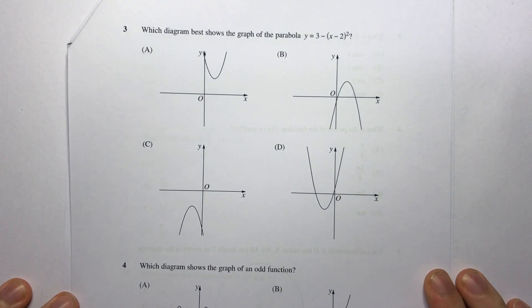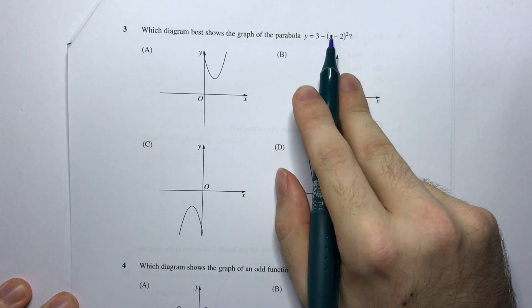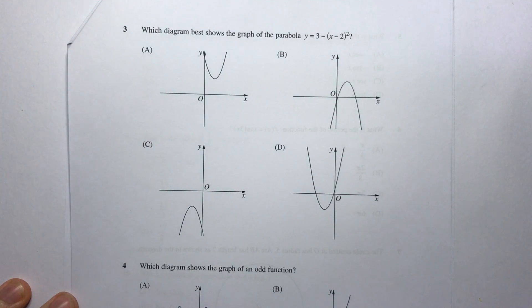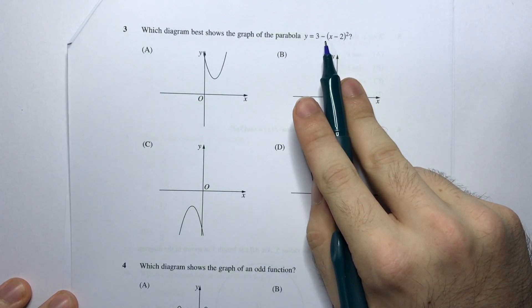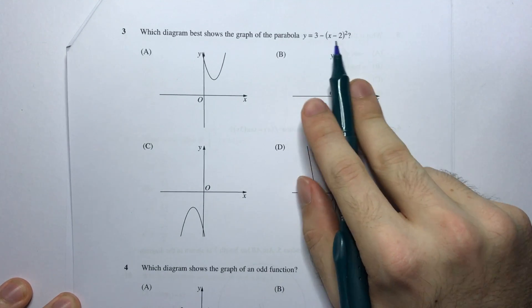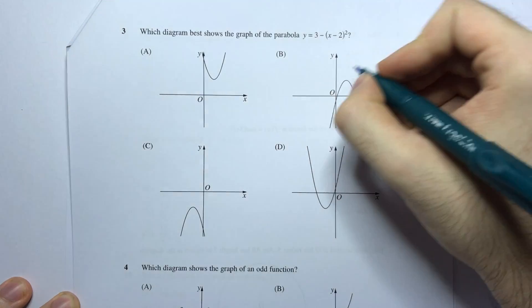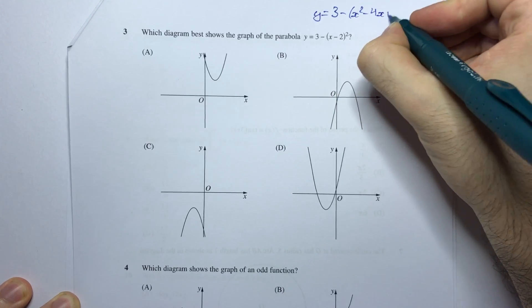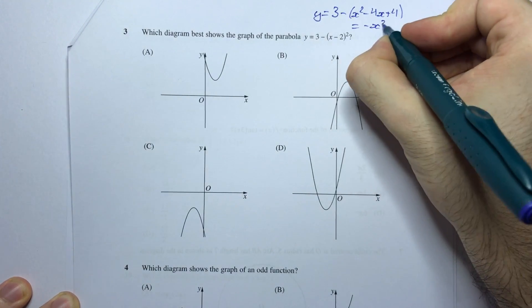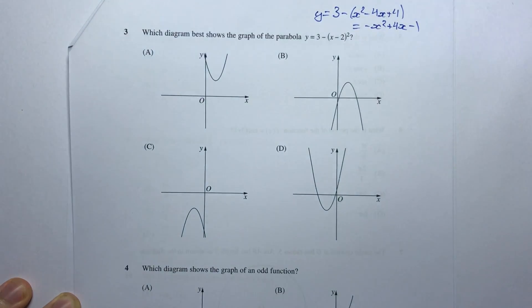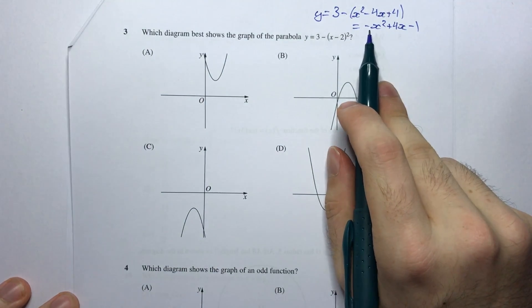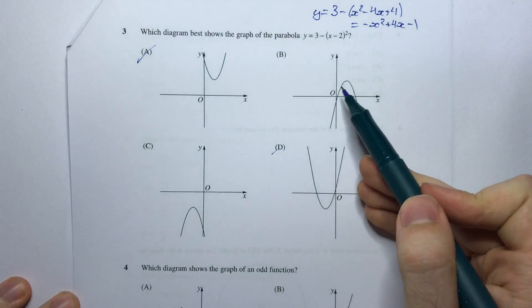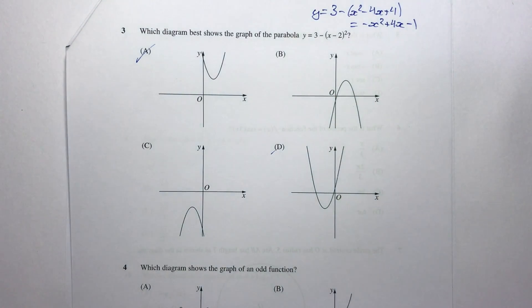Question 3: Which diagram best represents the graph of the parabola y equals 3 minus quantity of x minus 2 squared? So this is a multiple choice question so one of the strategies we have is just eliminating answers which are obviously wrong. Now I know here that this is going to be a concave down parabola because if I expand this out I'm going to have a negative x squared. Now maybe it's best if I actually expand it out. So that would be minus x squared minus 4x plus 4 which would be negative x squared plus 4x and minus 1. So clearly it's going to be concave down. I can eliminate A and D. Now I have to distinguish between these two.